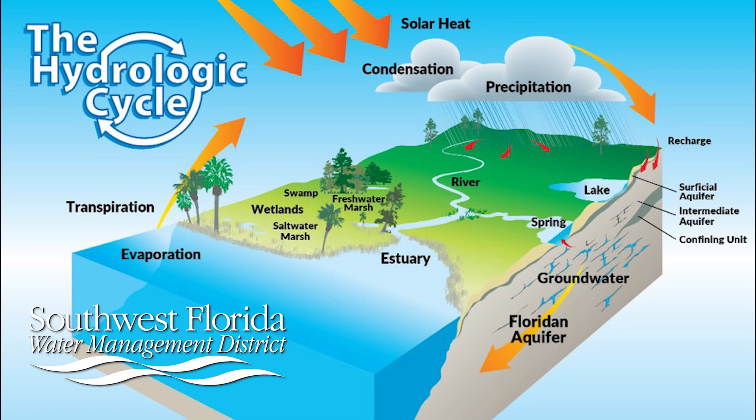Water levels in our region are highly influenced by rainfall, and rainfall is the source of water to all of our district's lakes, rivers, and aquifers. On average, the district receives about 53 inches of rain a year, and a large portion of this rainfall evaporates back up to the atmosphere, while some of it soaks into the ground and refills our aquifer.